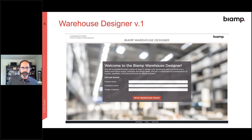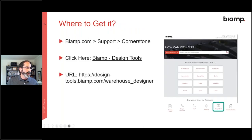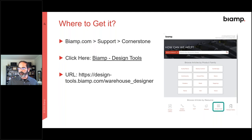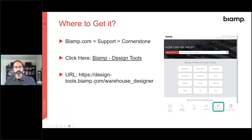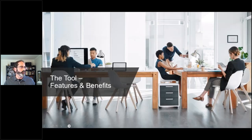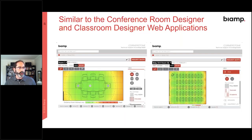Where do you get the software? There are three ways to get there. You can go to the BIAMP website, click on Support, go to the Cornerstone area — that's where all the knowledge-based resources are. At the bottom of the page there's a thing called Design Tools. But Avery mentioned that in the chat we should have all the links, so you don't have to navigate all of these — you can just click on them there. There's a full URL if you want to write it down.